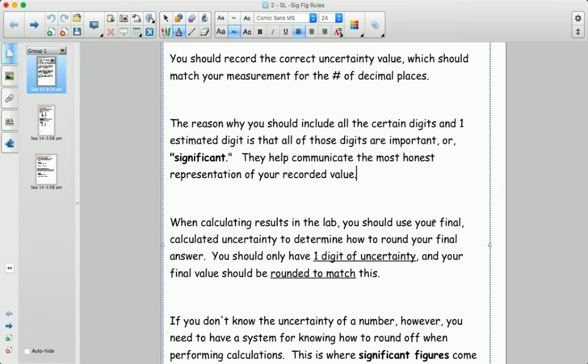A second estimated digit would not be useful. If we don't know anything about the tens place or if we're uncertain about the tens place then we shouldn't report anything about the hundreds place because then we're extremely uncertain about it. That's why we only include the one uncertain, one estimated digit, but we do consider it to have some value.